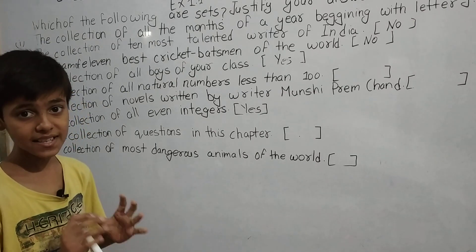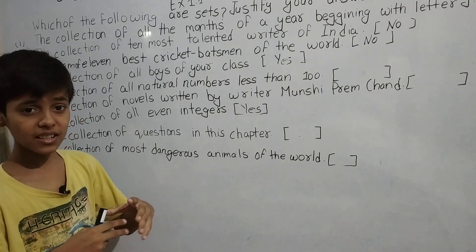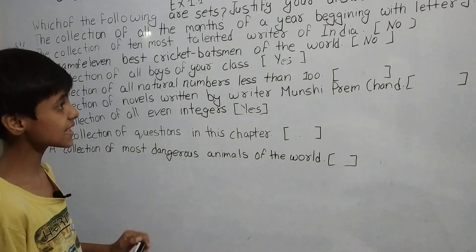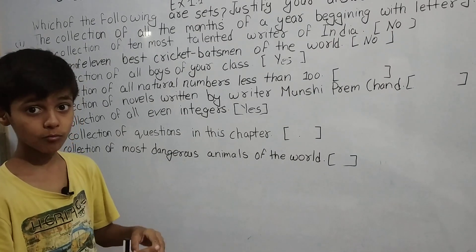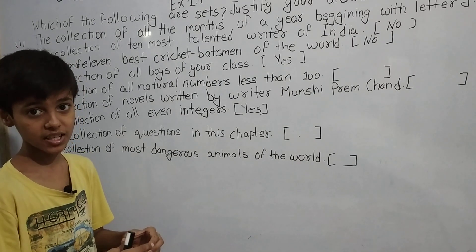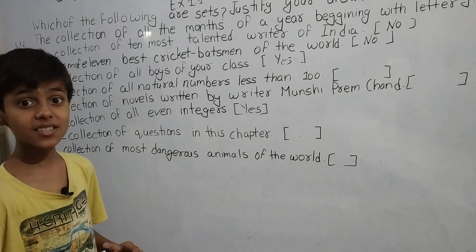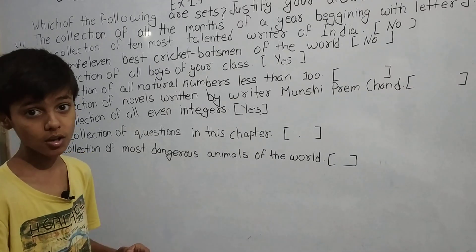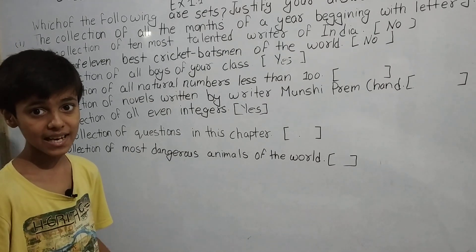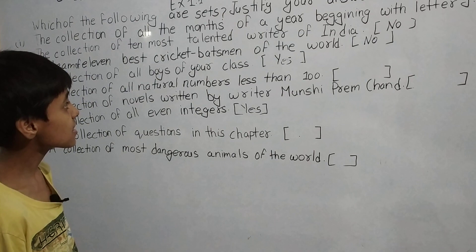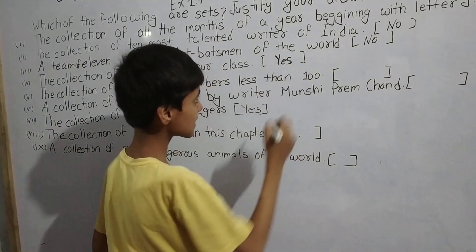Part (iv): The collection of all boys of your class. This is a set because if anyone asks me for the list of all boys in my class, the elements I give will be the same list any other boy in my class would give. The list does not vary, so this collection is yes — a set.